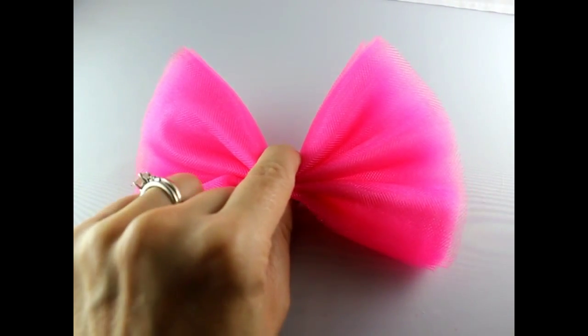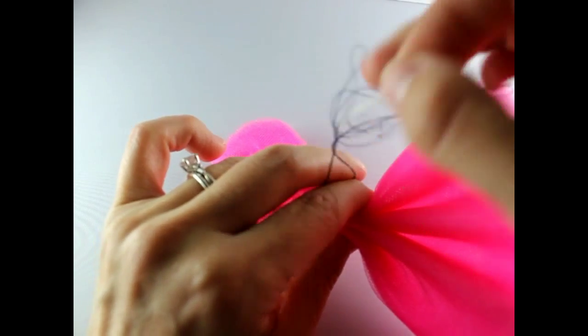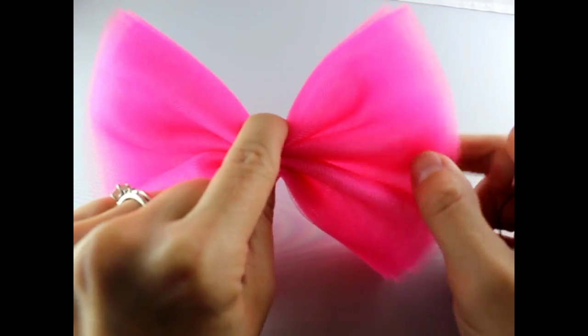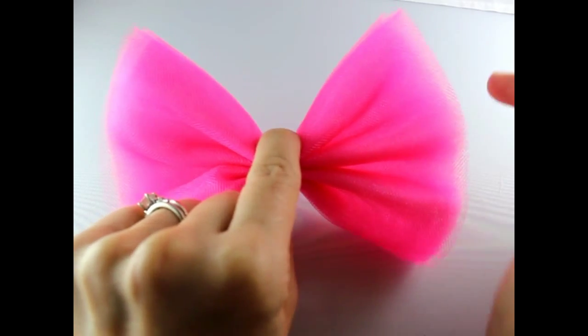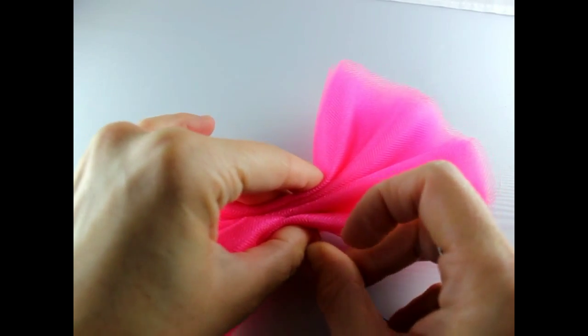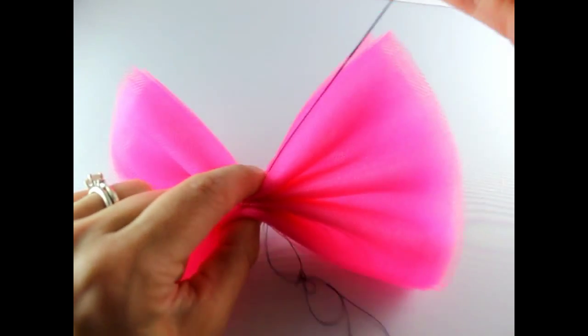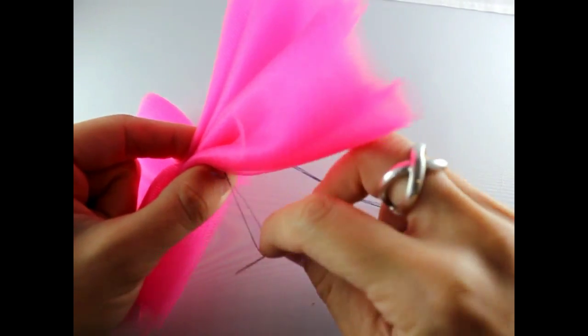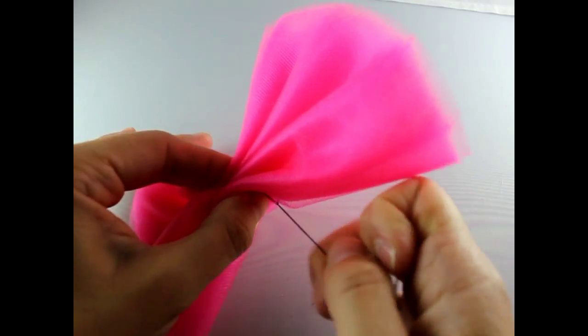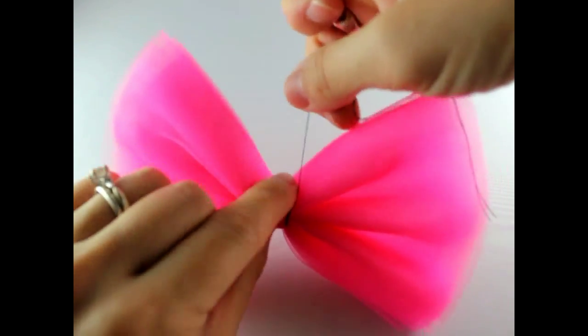Now you want to get your needle and thread. Find your center of your bow and just push your needle right through that center. Pull through. Find your loop. Pull it tight. And then just wrap around your bow.